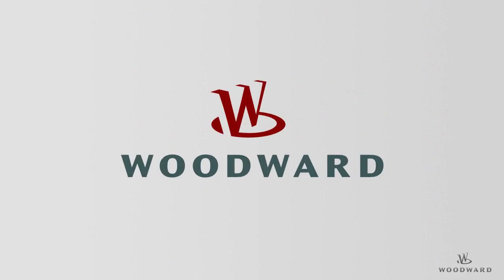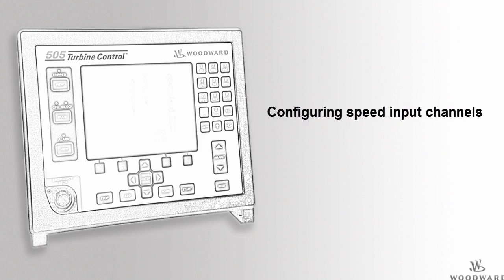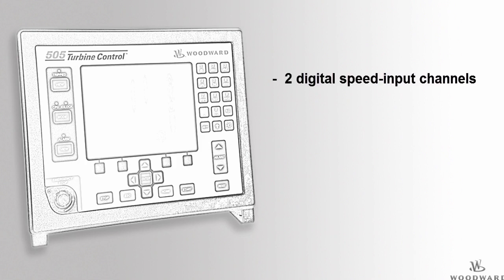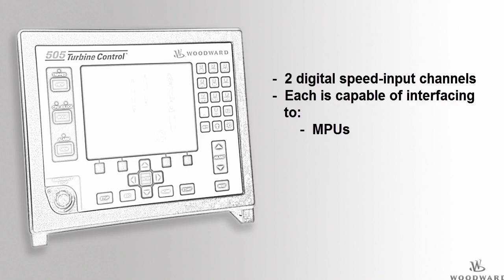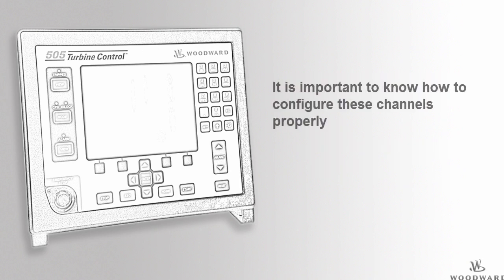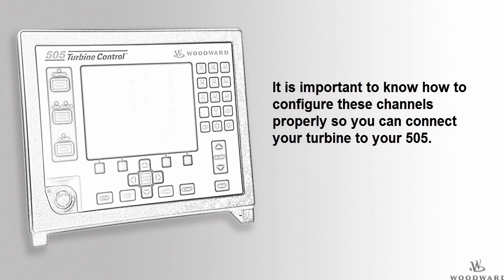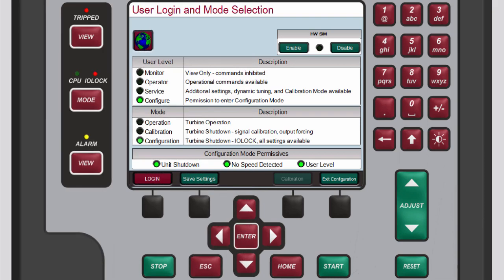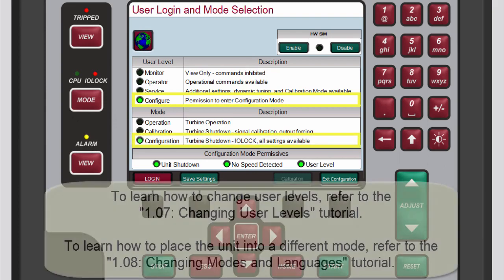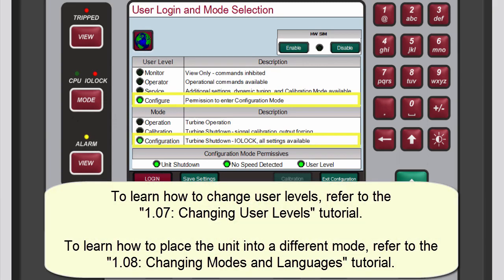Hello, and welcome to the 505 tutorial for configuring speed signals. In this tutorial, you will learn how to configure speed input channels. The 505 has two digital speed input channels capable of interfacing to magnetic pickup units, or MPUs, and proximity speed probe sensors. It is important to know how to configure these channels properly to connect your turbine to your 505 controller. To configure speed input channels, you must be logged in to the Configure User Level and Configuration Mode. Refer to the Changing User Levels and Changing Modes and Languages tutorials to learn how to do this.